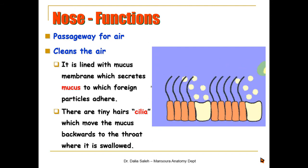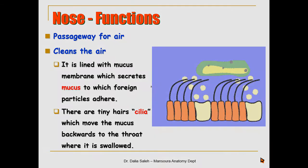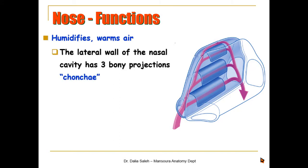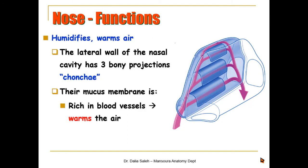The nose also humidifies and warms the air. The lateral wall of the nasal cavity has three bony projections called conchae — the superior, middle, and inferior nasal conchae. They are covered by mucous membrane rich in blood vessels that warms the air and also secretes mucus that humidifies the dried air.